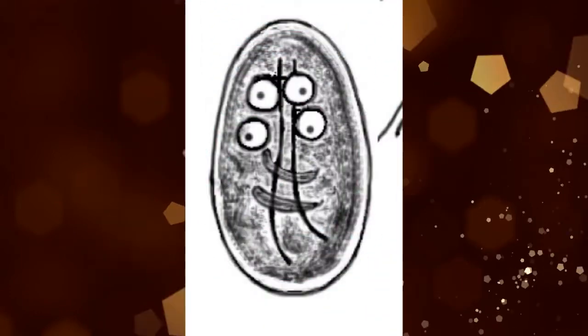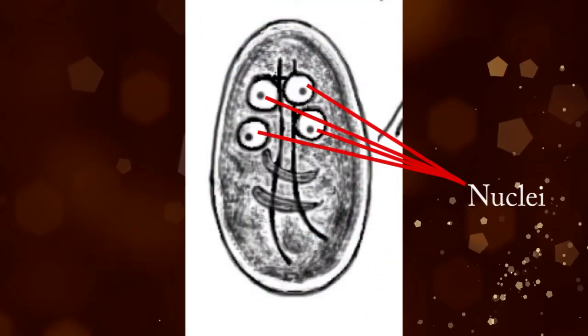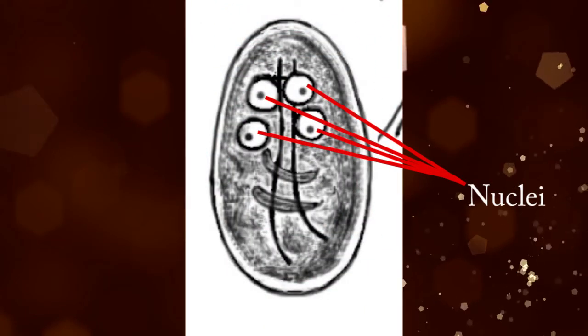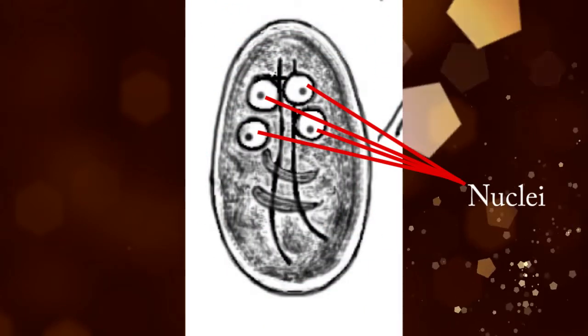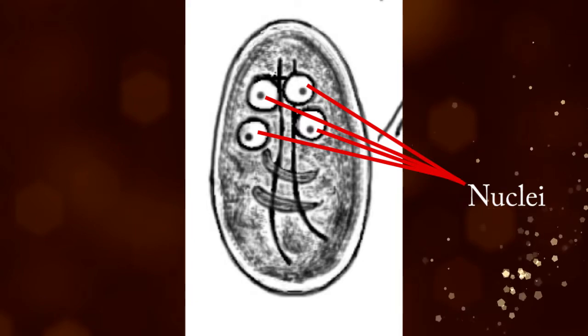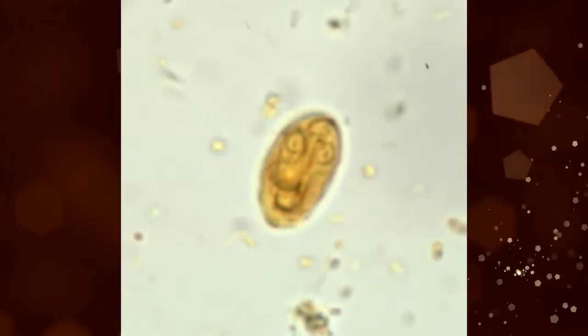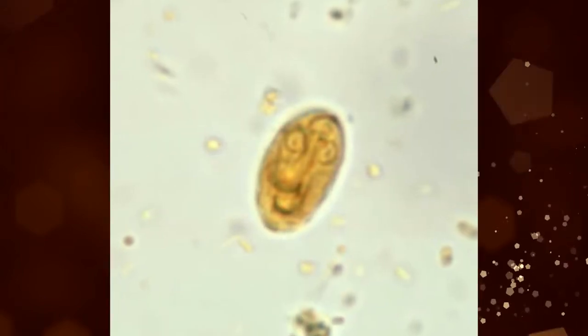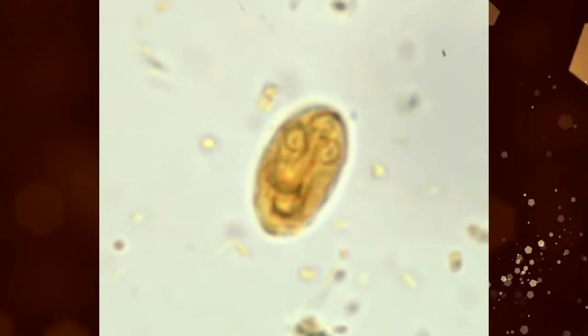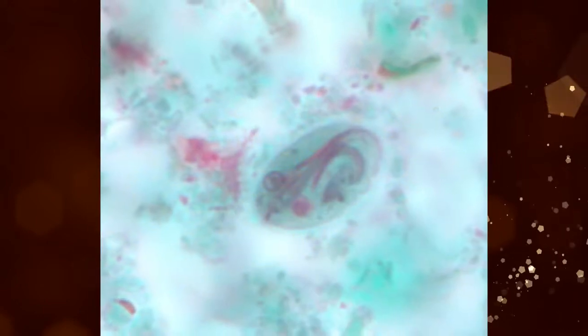Mature cysts have 4 nuclei, while immature cysts have 2. Nuclei and fibrils are visible in both iodine-stained wet mounts and trichrome-stained smears.